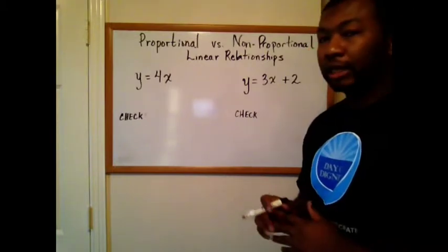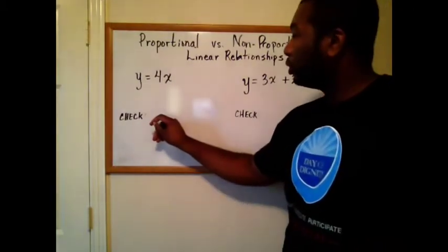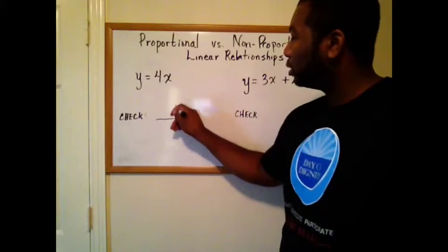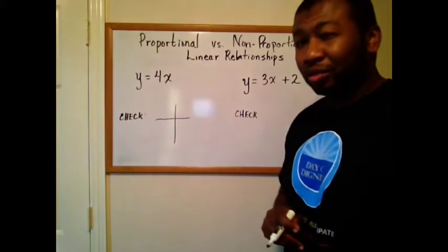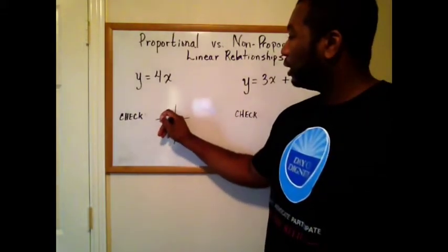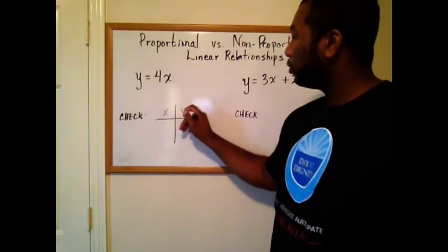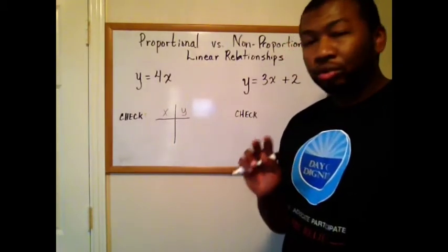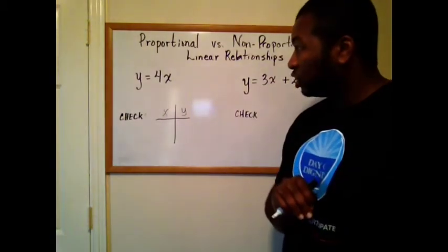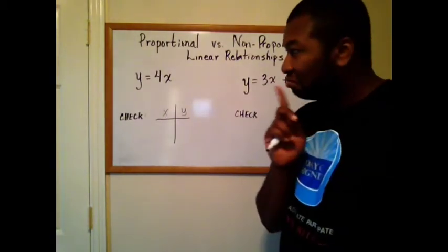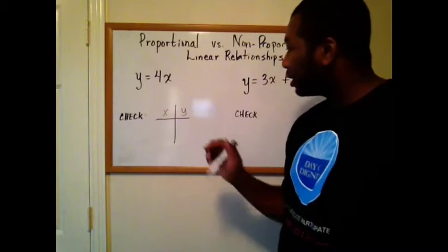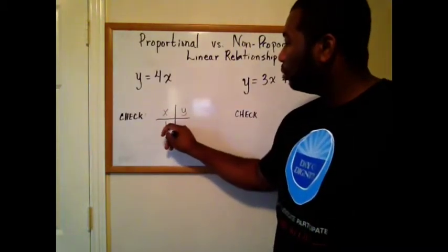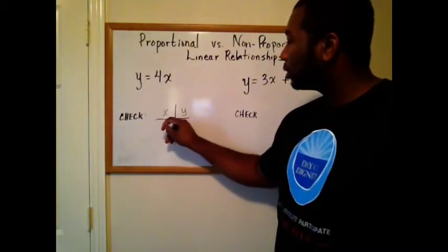This is how we check. Create a t-table for x values and y values. All I need is two pairs of points. So I'll just make up a point for x. Any point other than zero works just great.